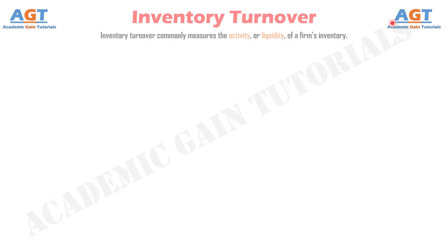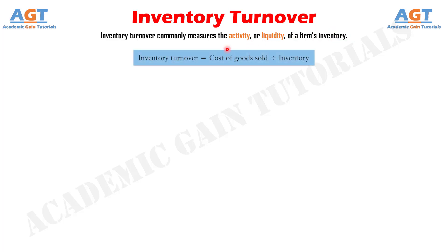Inventory turnover commonly measures the activity, or liquidity, of a firm's inventory. It is calculated as: inventory turnover equals cost of goods sold divided by the inventory.